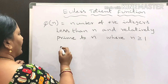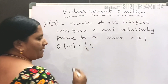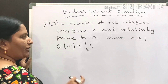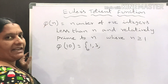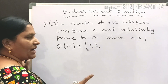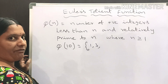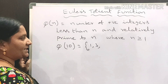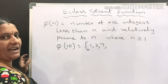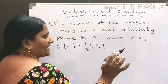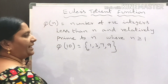For example, let us take phi of 10. GCD of 1 and 10 is 1, so we take 1. GCD of 2 and 10 is 2, so we do not take 2. GCD of 3 and 10 is 1, so we take 3. GCD of 4 and 10 is 2, so we skip 4. GCD of 5 and 10 is 5, skip 5. GCD of 6 and 10 is 2, skip 6. GCD of 7 and 10 is 1, so we take 7.